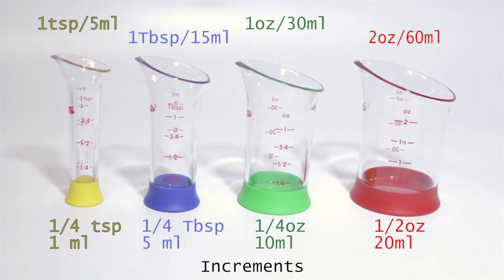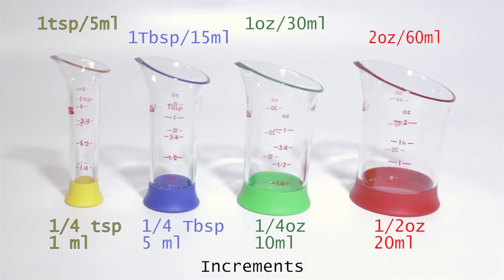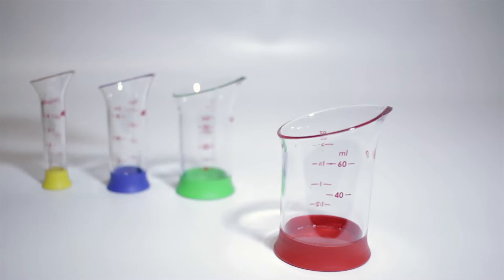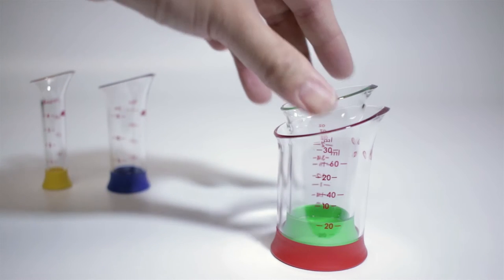All the increments are quarters of the largest size. It is rare that a recipe will ask for any of the smaller increments. You generally can find a beaker that will fit your needs in baking.